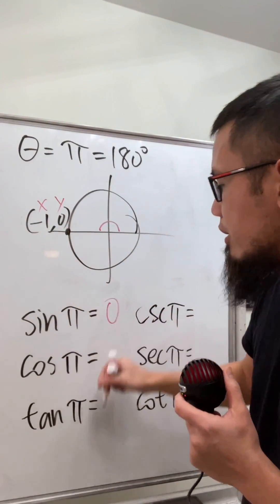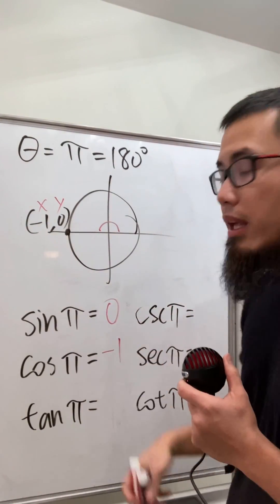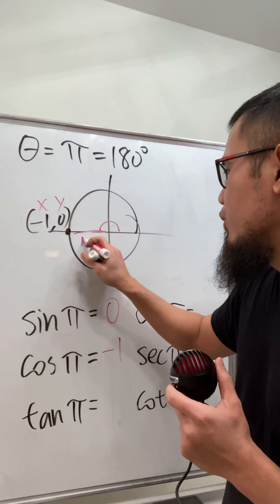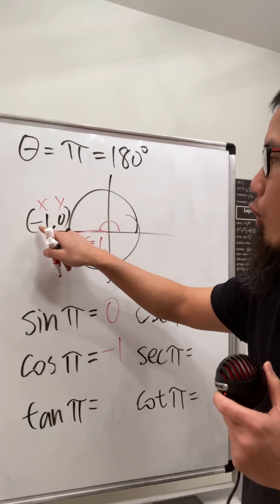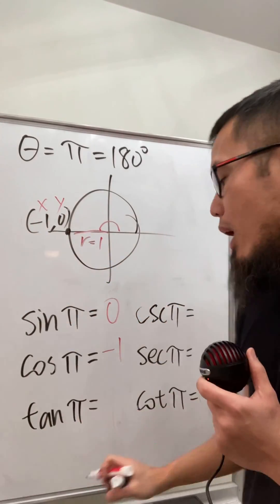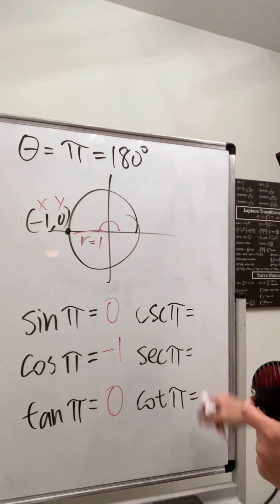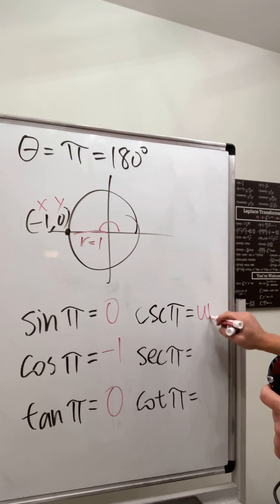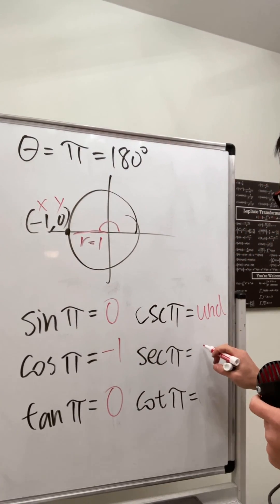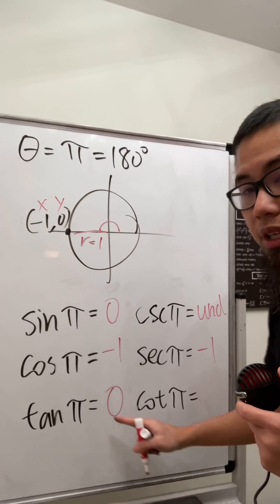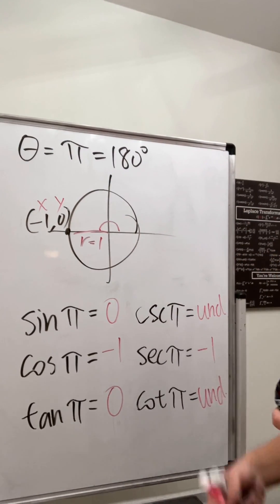Sine is the y-value = 0. Cosine is the x-value = -1 (since r = 1, dividing by 1 doesn't matter). Tangent is y over x = 0 over -1 = 0. For the reciprocals: cosecant is 1 over 0, undefined. Secant is 1 over -1 = -1. Cotangent is 1 over 0, also undefined. And we are done.